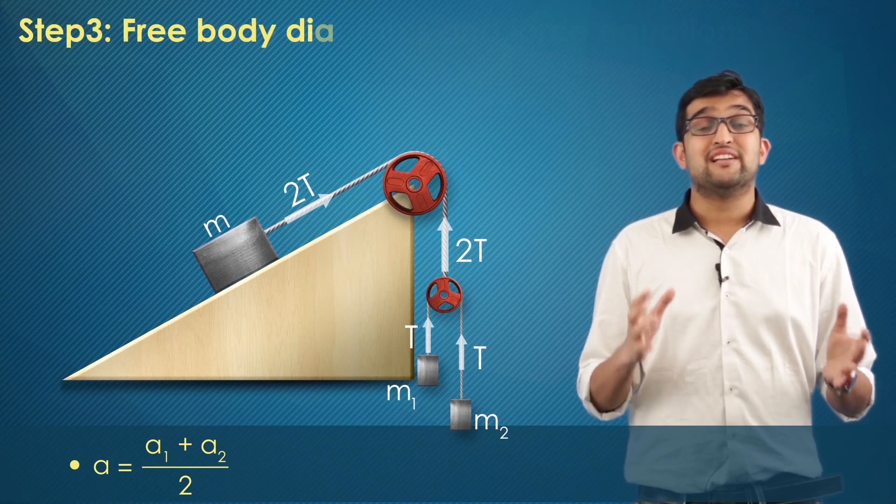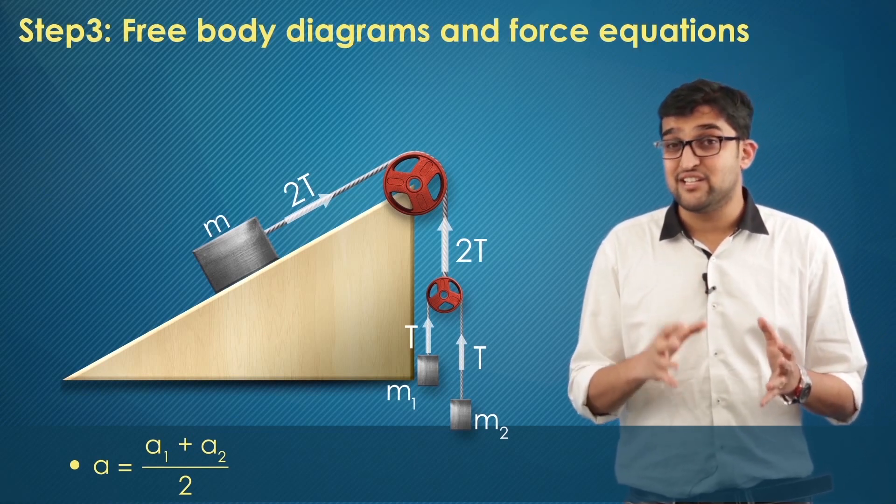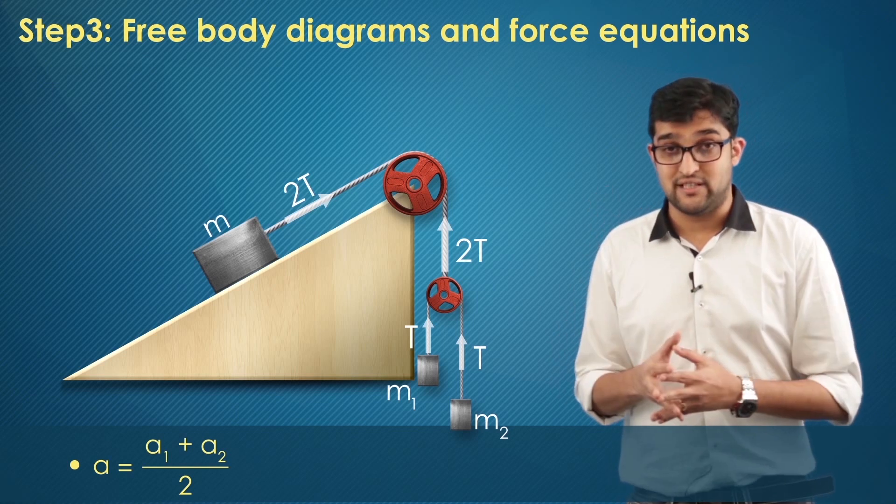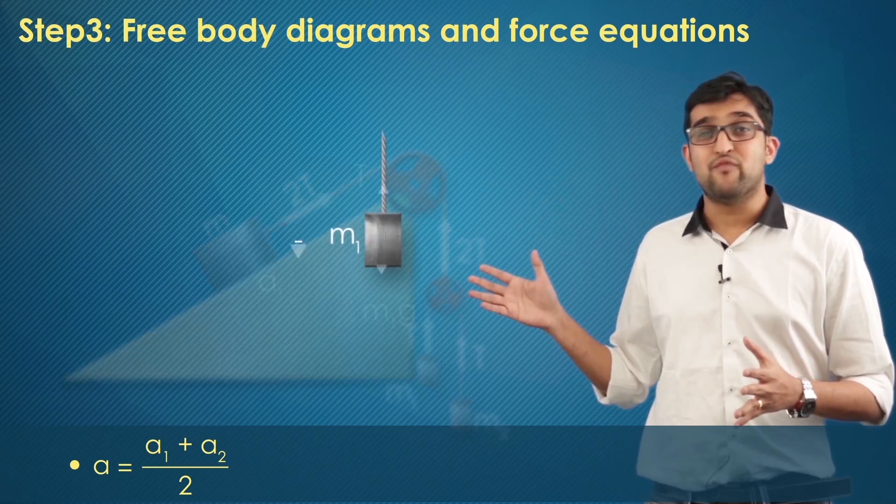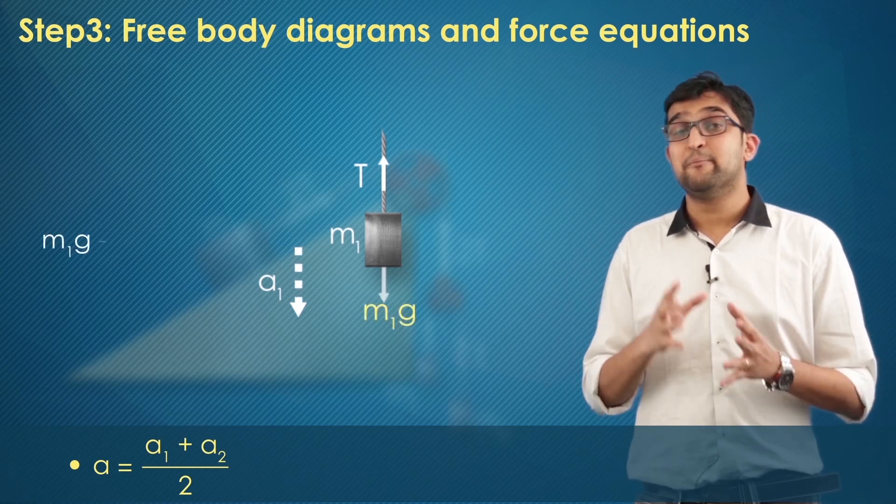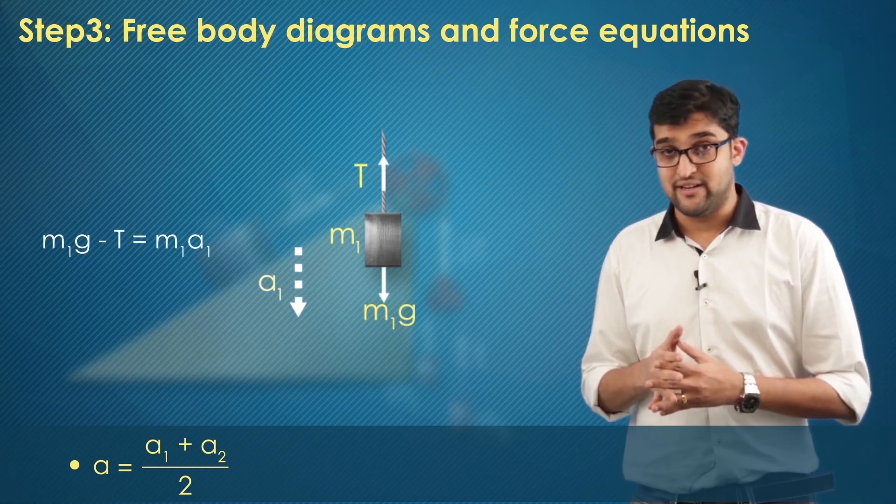Now that we got the relationship between the different accelerations of the objects, I'll go into the free body diagrams of each of the objects. Let's start with FBD of M1 here. So with that, if I analyze, I get M1g minus T equals M1a1.